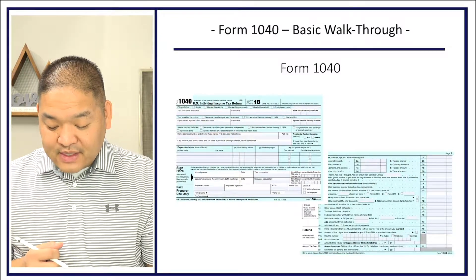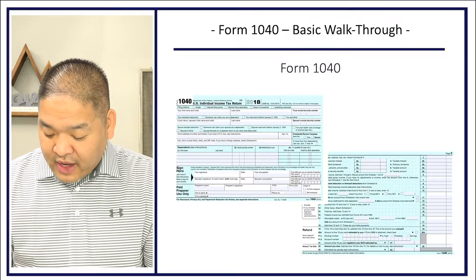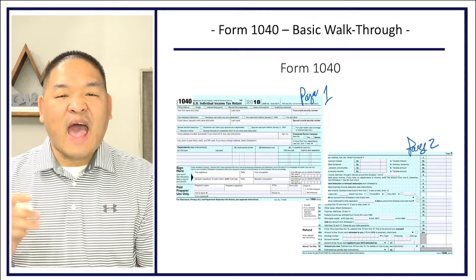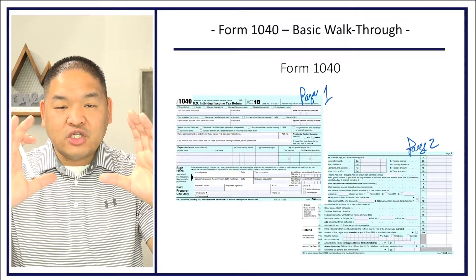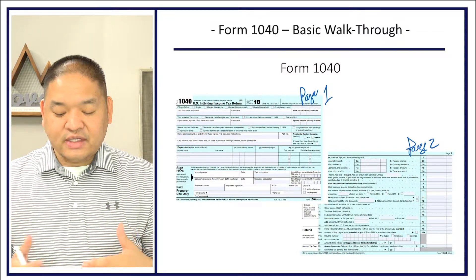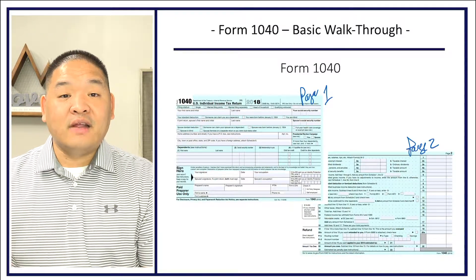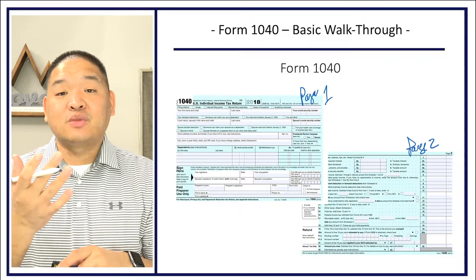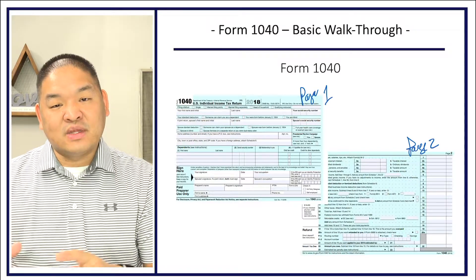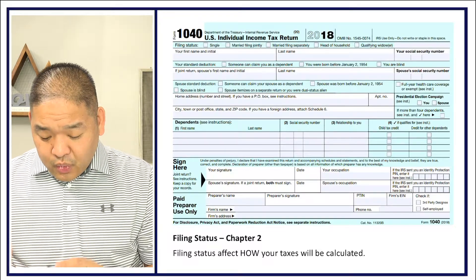Here is a look at the basic 1040 — it's essentially a half-sheet piece of paper with page one on the front and page two on the back. It has a peachy, aquamarine-type color if you actually print it out, but most of us now electronically file so we don't often see what it looks like in real life.